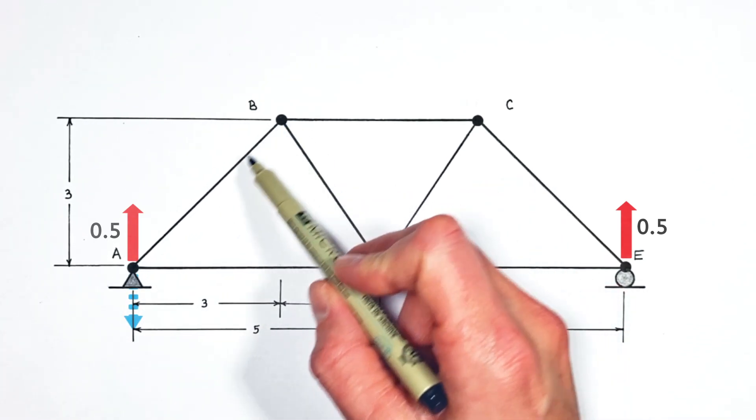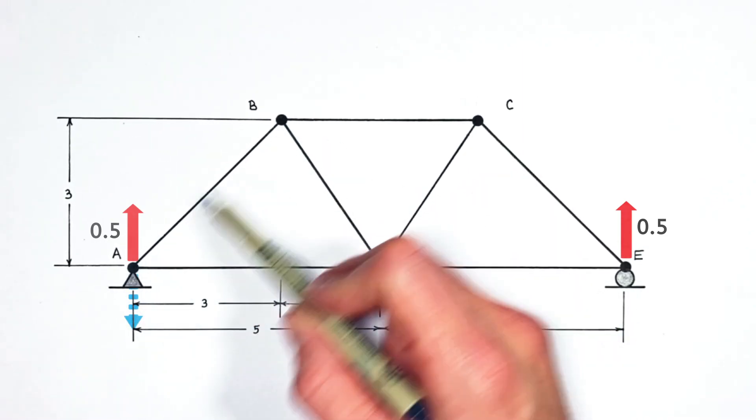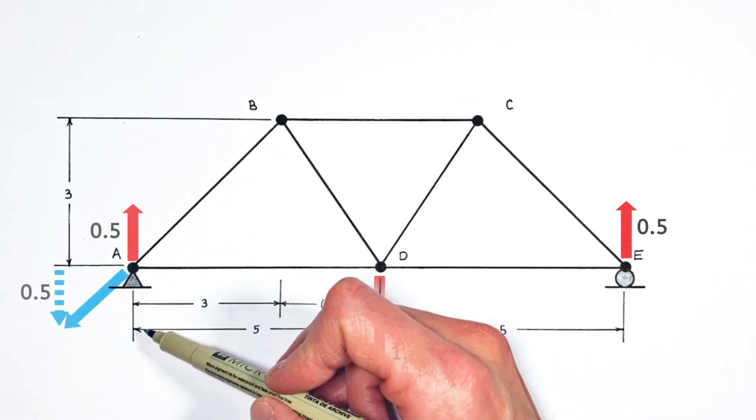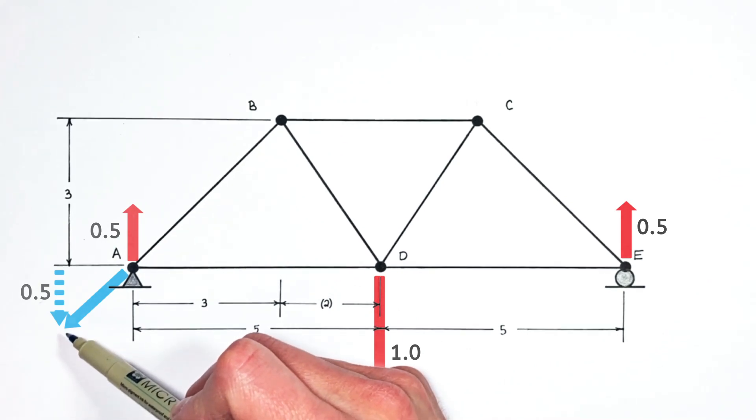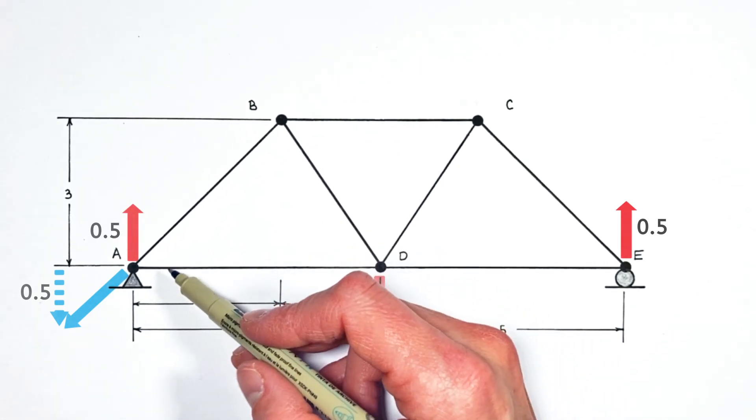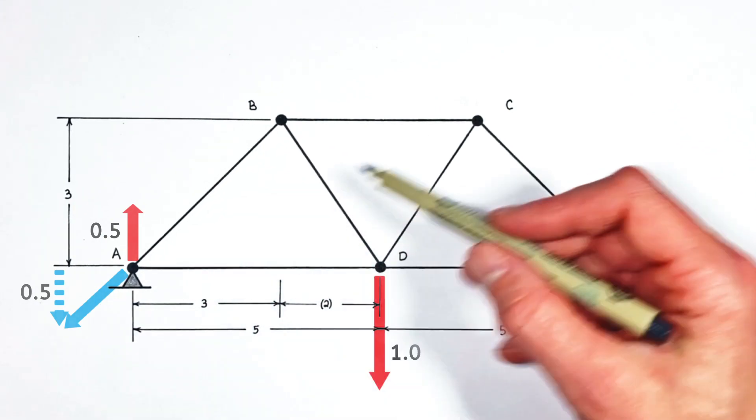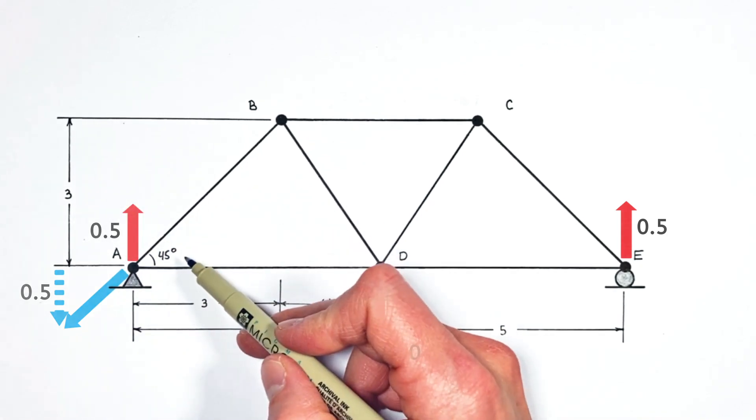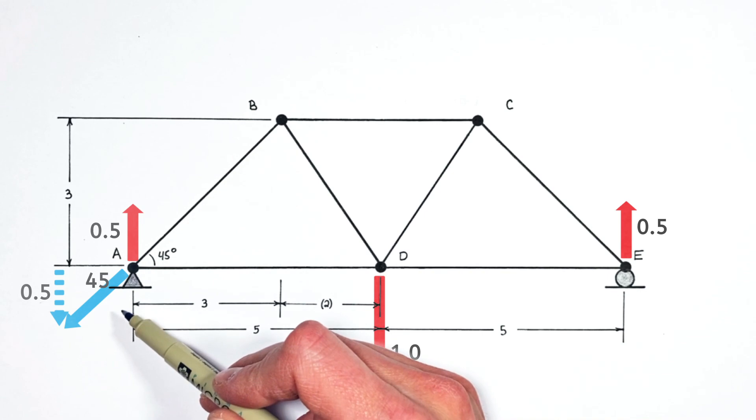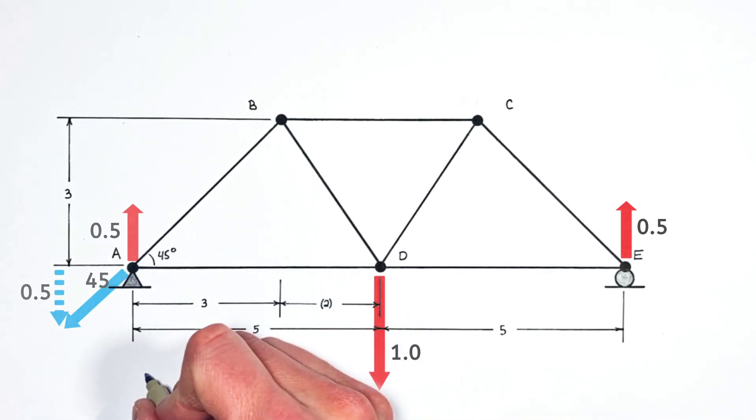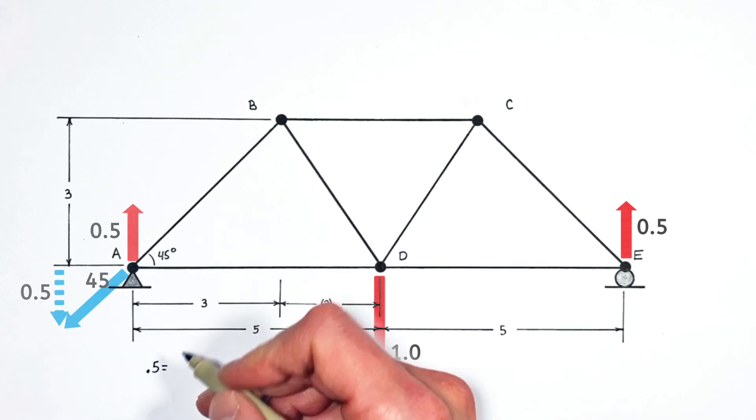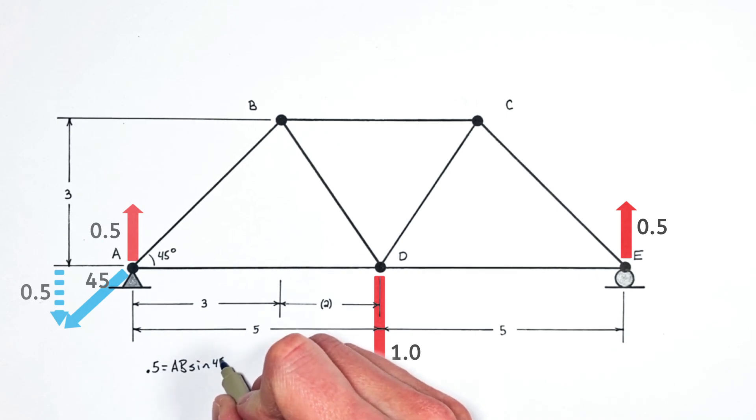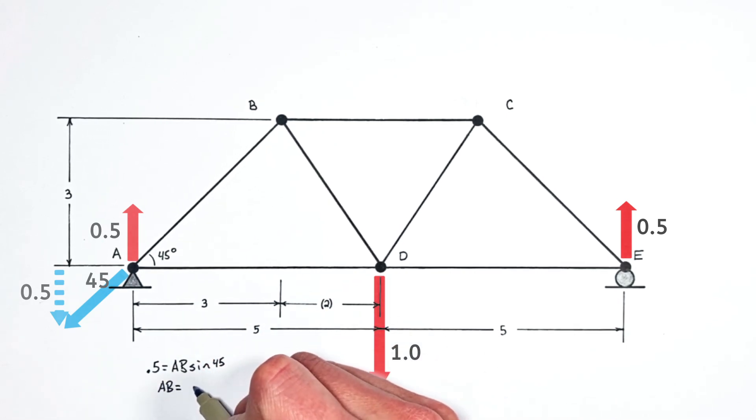What that means is the vertical component of the force in AB has to equal 0.5. Now I say that force is a component because remember, a beam can only act along its axis. Truly what beam AB is doing is pushing down and to the left so that its vertical component is 0.5. Now if we want to solve for the length of this hypotenuse and we know a component, what that means is we're going to have to solve for the angle in this right triangle. Well if you look at the geometry of the entire truss here, this angle right here is 45 degrees, which means this angle right in here is also 45 degrees. So setting the opposite side, which has a length of 0.5, equal to the force in AB, I'm just going to call that AB, multiplied by the sine of 45. We solve for AB and we find that AB is equal to 0.71.